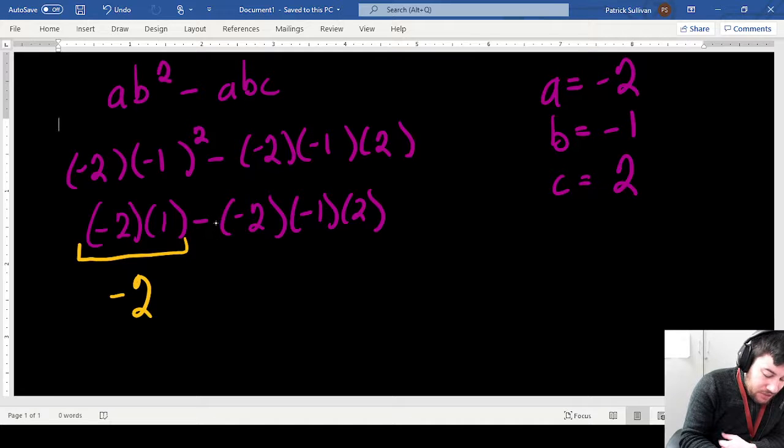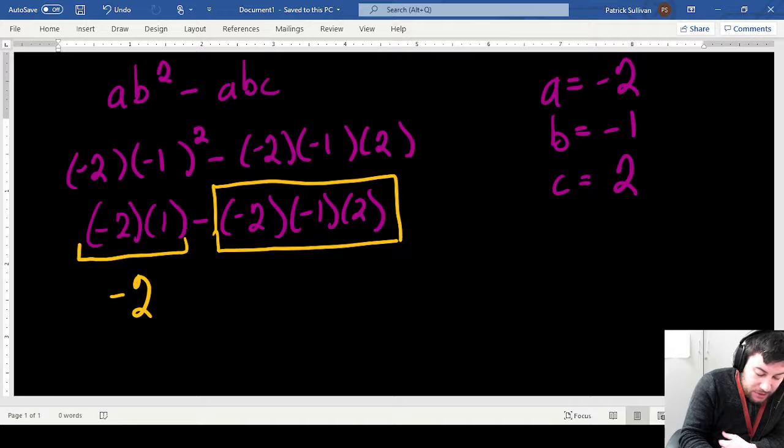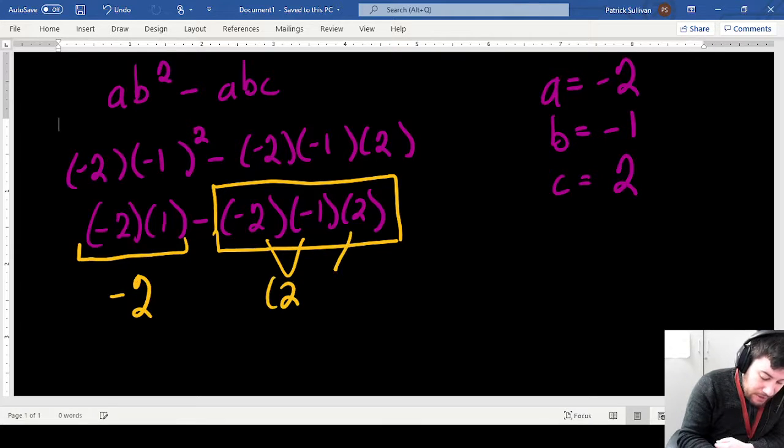Now this portion right here, I'm going to kind of block it off, and I'm going to do this part first. Negative 2 times negative 1, well that's positive 2, and then bring down the other 2, and that's equal to 4.